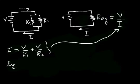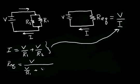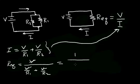So R_eq is equal to the voltage V divided by the current, which is V over R1 plus V over R2. Notice that the voltage V cancels, and we're left with 1 divided by the quantity 1 over R1 plus 1 over R2.